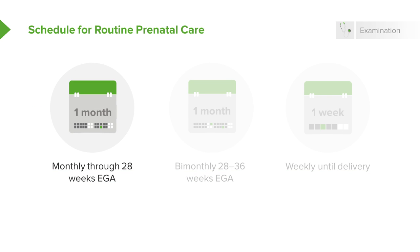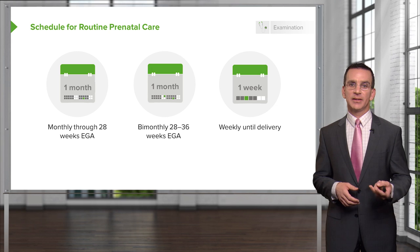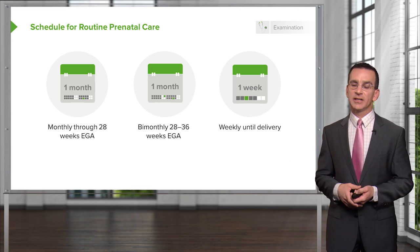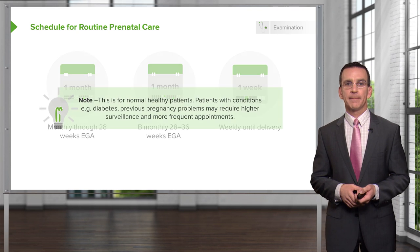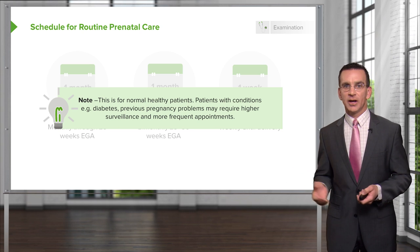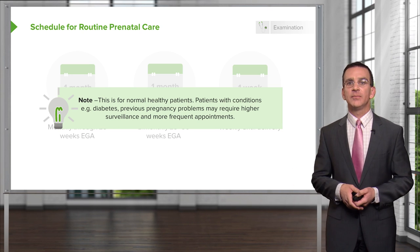Let's look at the schedule for routine prenatal care. In the United States for the average risk patient — not high risk — visits are monthly through 28 weeks of gestational age, then twice a month between 28 and 36 weeks, and then from 36 weeks until delivery every single week. That's for normal healthy patients. Patients with diabetes or twin pregnancies will be seen more often.